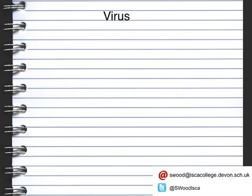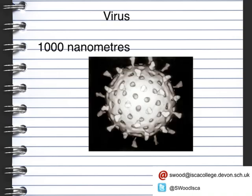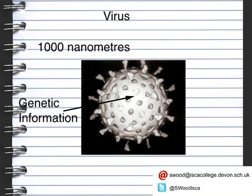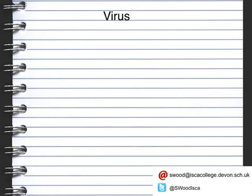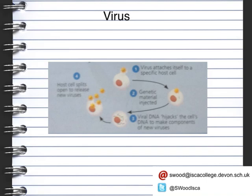The virus is the smallest of all the microbes, only about 1,000 nanometers in size. In the middle is the genetic information, surrounded on the outside by a protein coat. Viral reproduction happens inside other living cells — the virus attaches itself to a specific host cell, injects its genetic material into that host, and the viral DNA hijacks the cell's DNA to make components of new viruses. The new viruses are then released when the host cell splits open.